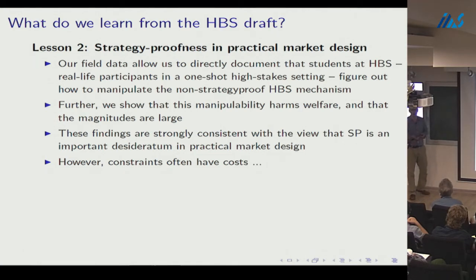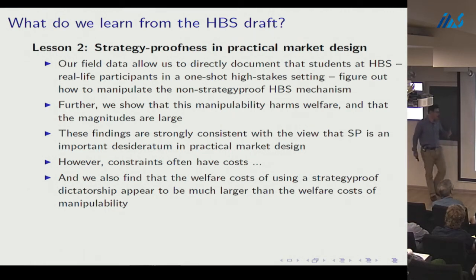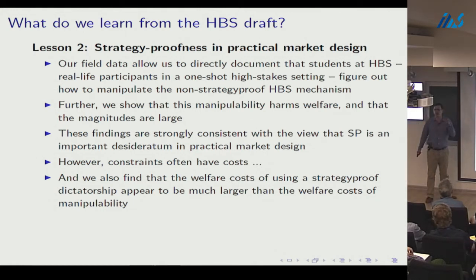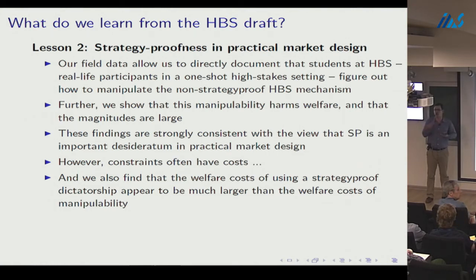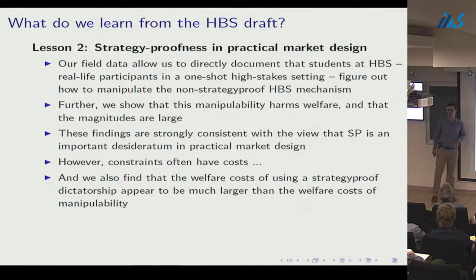Both strategic play and optimization mistakes harm welfare. Strategy-proofness is a constraint with costs, but the welfare costs of using the strategy-proof dictatorship appear to be larger than the welfare costs of manipulability. There's a class of choose-one-at-a-time mechanisms in which strategy-proofness characterizes dictatorship — so within that class you can interpret the cost of strategy-proofness as the cost of using a dictatorship.